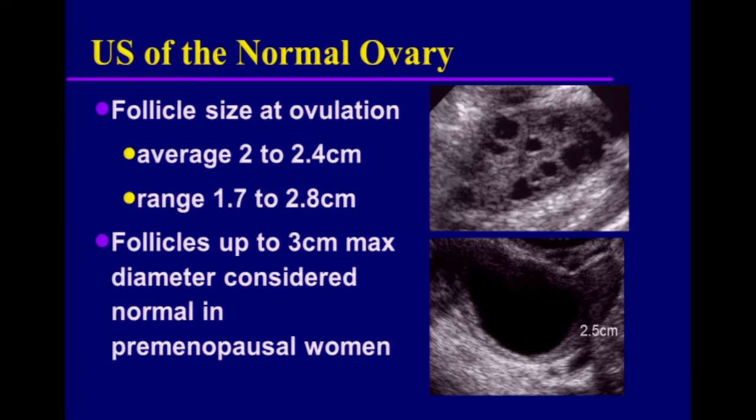First of all, let's review the normal ovary. The ovary is unique in that it has small cysts, which are really follicles, as part of its normal structure. We know these follicles get up to, on average, about two to two and a half centimeters at ovulation. From the Consensus Conference, we considered follicles up to three centimeters in maximum diameter to be normal in premenopausal women, and we just consider that a dominant follicle. You do not want to report those as cysts.